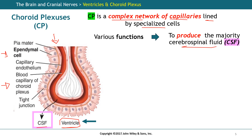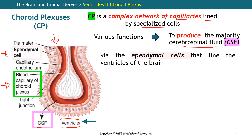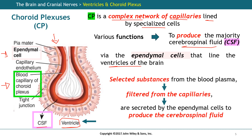The ependymal cells line the ventricles of the brain, select substances from the blood plasma, filter them, and then secrete the cerebrospinal fluid. The ependymal cells are ciliated cells, and you can also see the tight junctions sealing each one of the structures. This allows them to filter the blood so that blood cells never enter the ventricles.